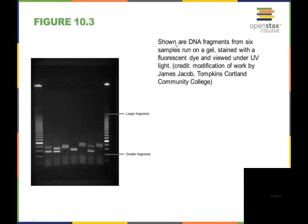Here are shown DNA fragments from six samples that are run on a gel and then viewed under UV light. You would have a scale that's put on and then you would have 1, 2, 3, 4, 5, 6 different samples, and you can see that they're cut in different places. The larger fragments are going to be slower to move. The smaller fragments are going to move faster.